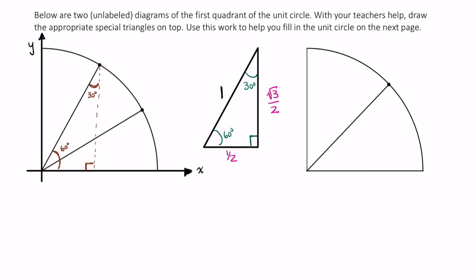Since this is the unit circle, this is the point 1, 0. This is the point 0, 1. Clearly, then, the length of this hypotenuse has to be 1.